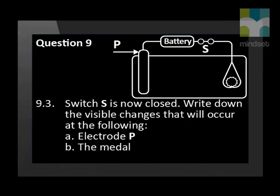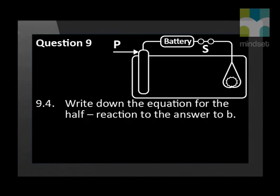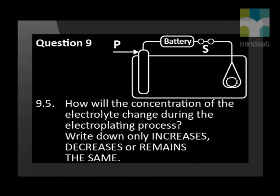Switch S is now closed. Write down the visible changes that will occur at electrode P and at the metal. Write down the equation for the half reaction for the change observed on the metal. How will the concentration of the electrolyte change during the electroplating process? Write down only increases, decreases, or remains the same.